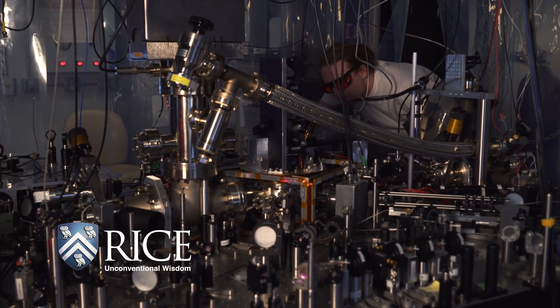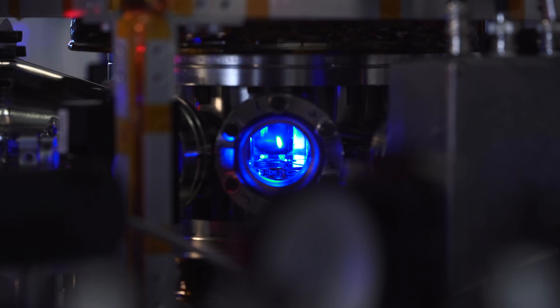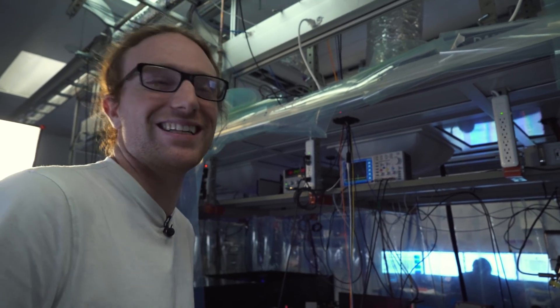The way the initial laser cooling process works is you have your atom in the middle, and then it tries to go one way and gets pushed back by a laser beam. So you have six beams going against each other and basically it can't get out—it's like a little mosh pit for atoms.